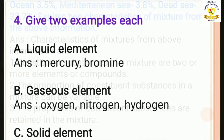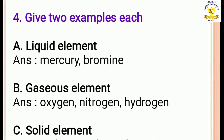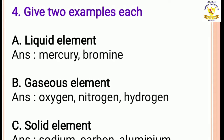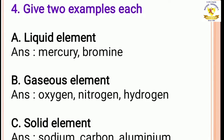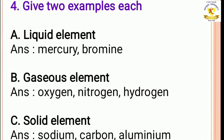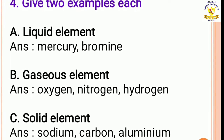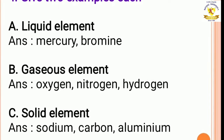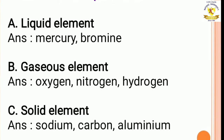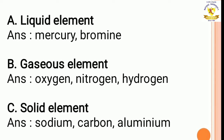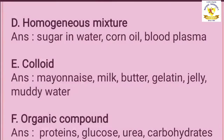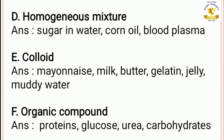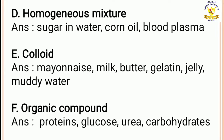Question number 4: give 2 examples of each. Liquid elements: mercury, bromine. Gaseous elements: oxygen, nitrogen, hydrogen. Solid elements: sodium, carbon, aluminium. Homogeneous mixture: sugar in water, corn oil, blood plasma.